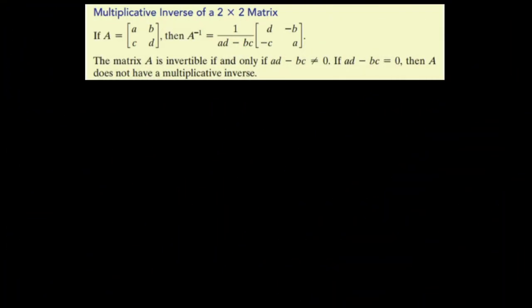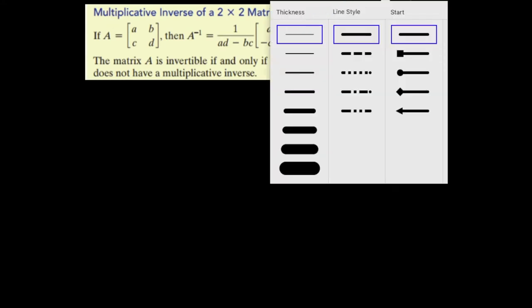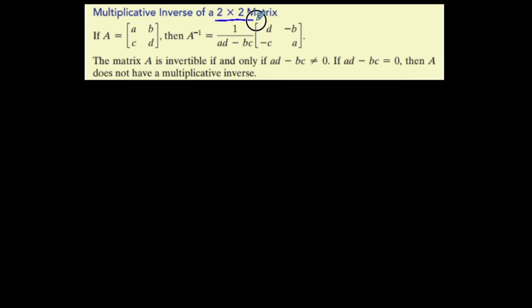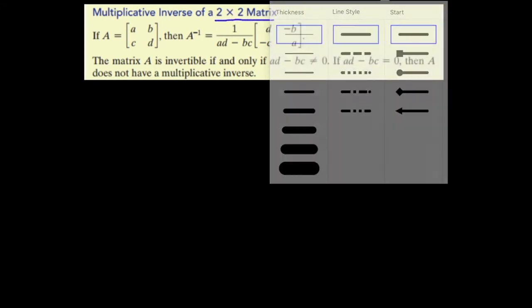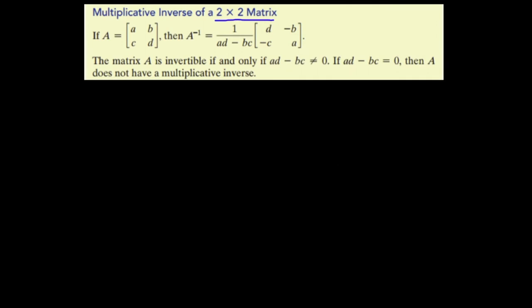We're going to determine how to find the multiplicative inverse of a 2 by 2 matrix, because I approach a 2 by 2 matrix differently than I would approach a 3 by 3 or 4 by 4. The multiplicative inverse has to be only for square matrices, and the determinant must not be 0. If you don't know what that is yet, I will have another video talking about determinants later. But let's find the multiplicative inverse of a 2 by 2 matrix.